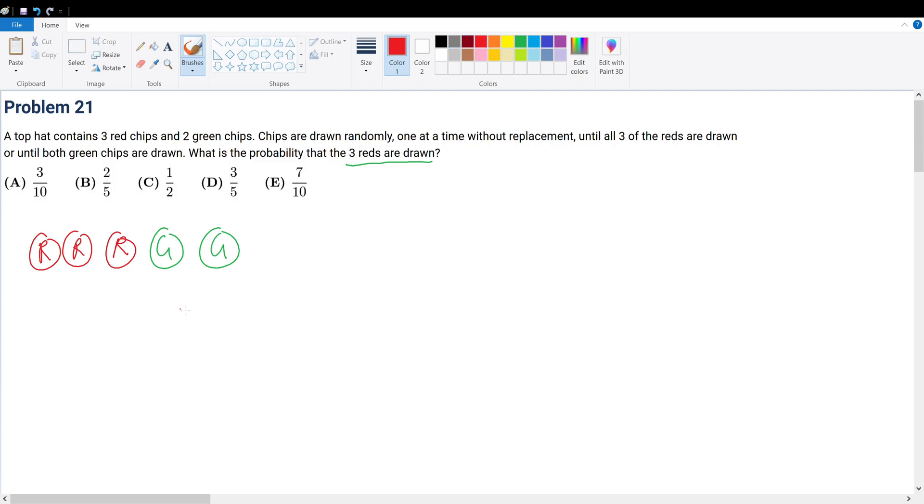So what is the probability in the first place? The probability of anything occurring is equal to the successful number of cases over the total number of cases. So in this case, how do we know the number of total cases? Well, the total cases here are the number of ways to draw chips. And remember, there are no specific quantity of chips that we must draw.